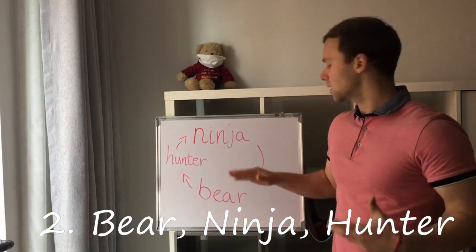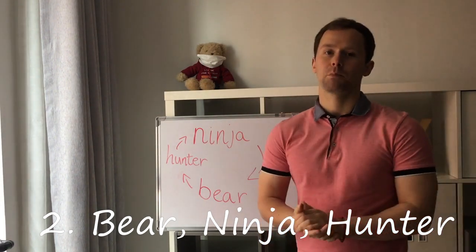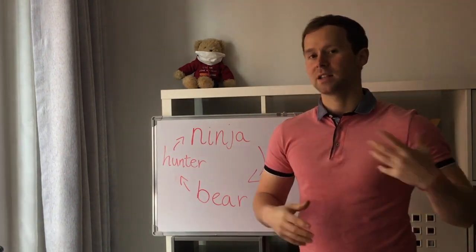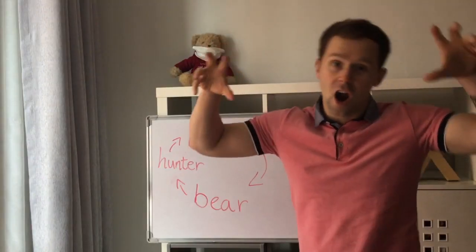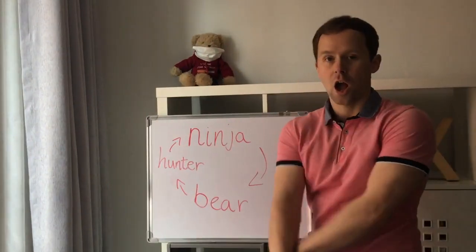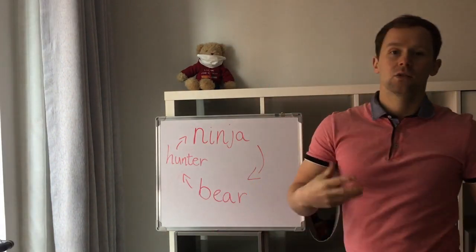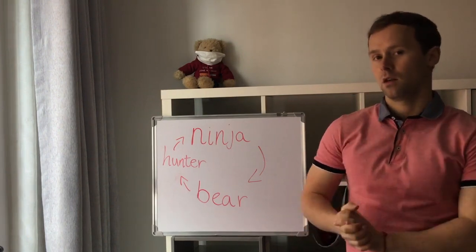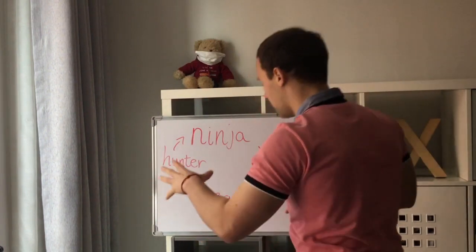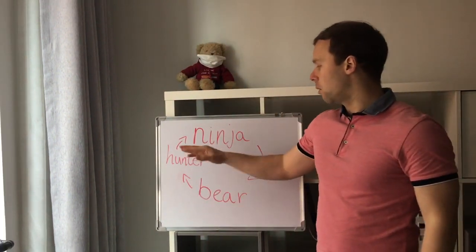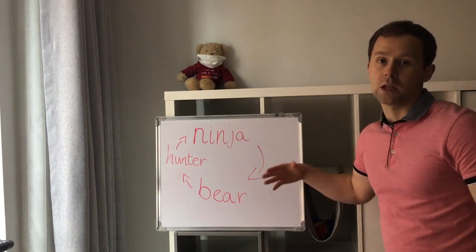Our second game is Bear, Ninja, Hunter. This game is exactly the same as paper, scissors, stone, but instead we're going to use bear, hunter, and ninja. Students can mingle around the class and use the language point you want to practice. Then they'll go back to back and say three, two, one. Bear will beat hunter, hunter will beat ninja, and ninja will beat bear.